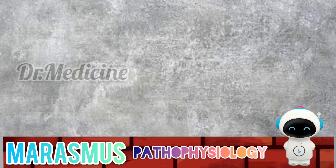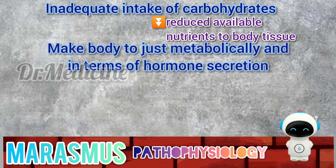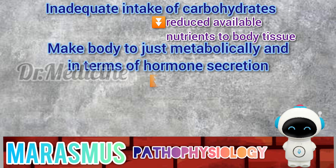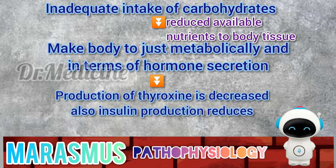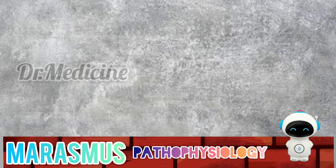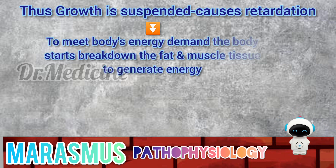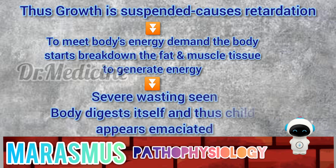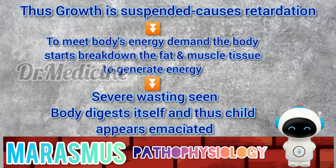Pathophysiology of marasmus: Inadequate intake of carbohydrate leads to reduced available nutrients to the body tissue. This makes the body start adjusting metabolically and in terms of hormone secretion. The production of thyroxin is decreased in order to reduce the metabolic rate so that less energy is required. The production of insulin reduces to try and maintain the blood sugar level. As a result, growth is suspended, which accounts for the retardation seen in malnourished children. To meet the body's energy demand, the body breaks down fat and muscle tissue to generate energy so that essential metabolic activities are kept going. Despite the inadequate carbohydrate intake, this accounts for the severe wasting seen in marasmus. The body literally digests itself to maintain serum levels.